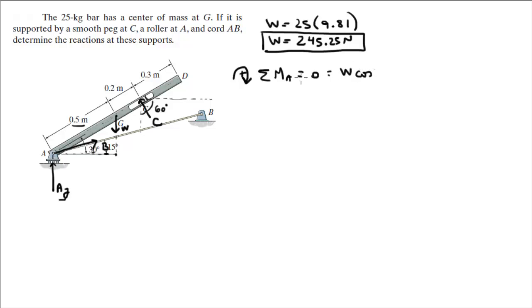Actually, it's W. Actually, no. Sorry about that. It's W times the cosine of 30 times 0.5. Sorry, guys. I was a little confused about my notes.